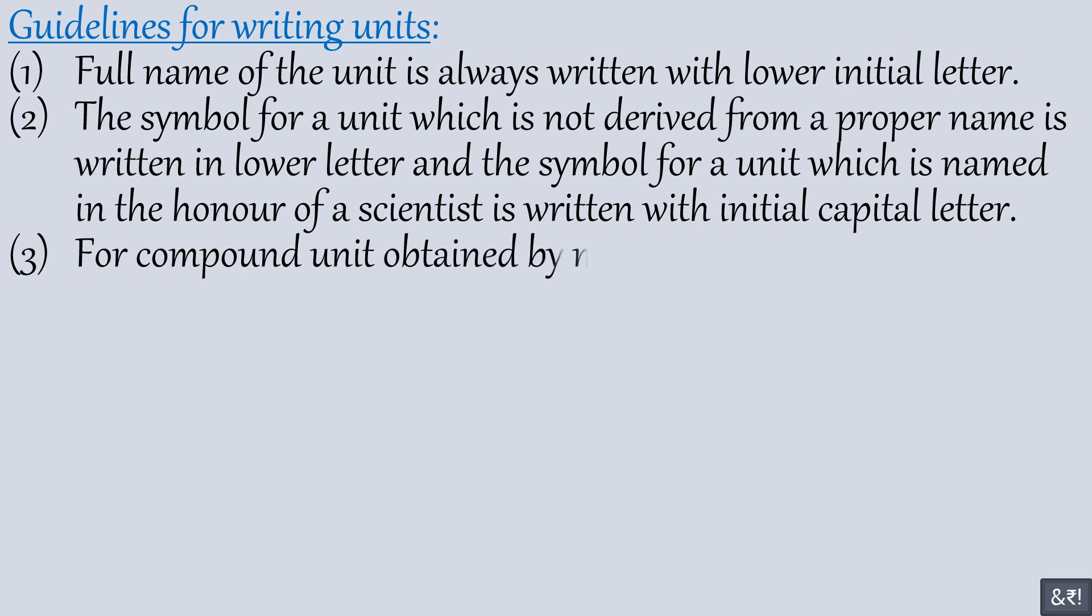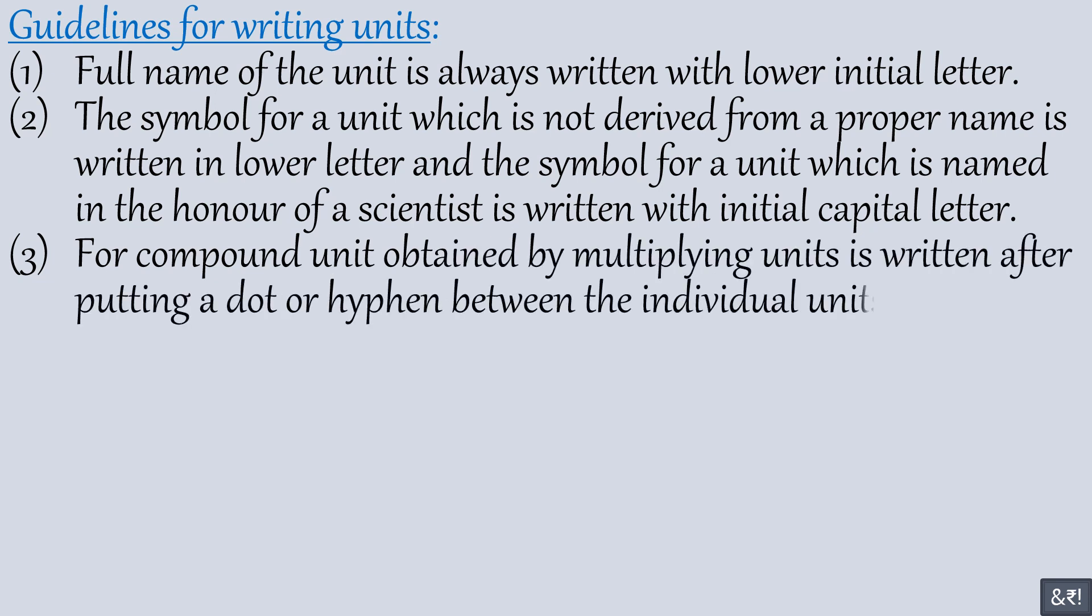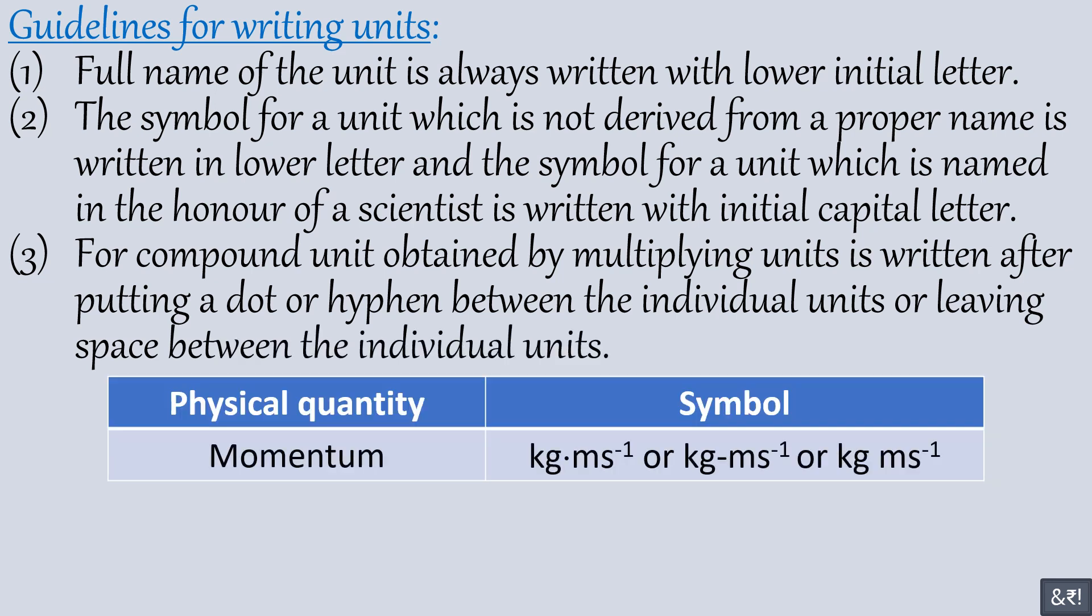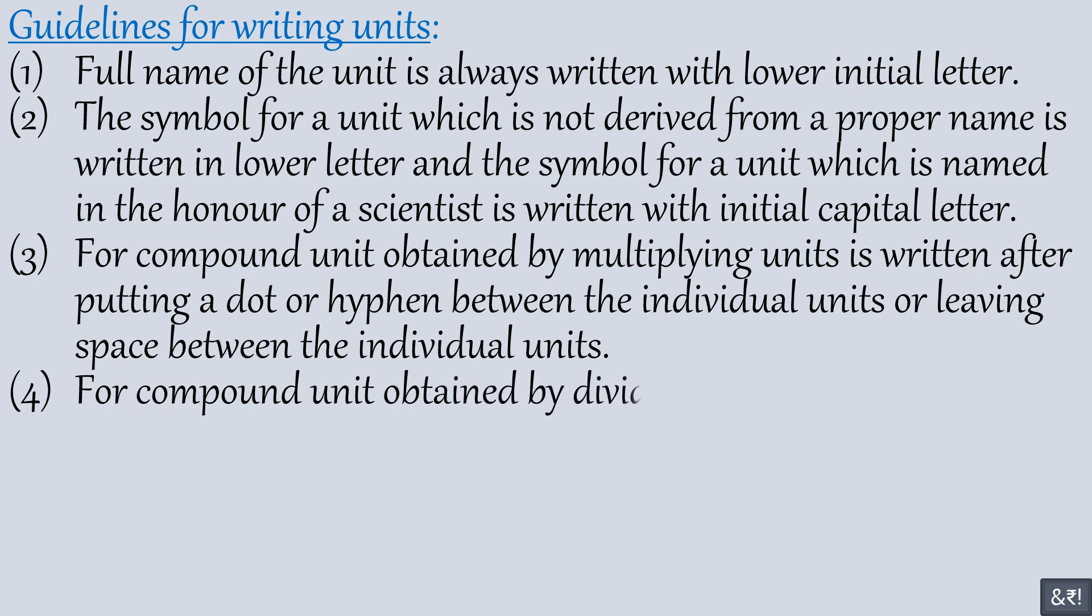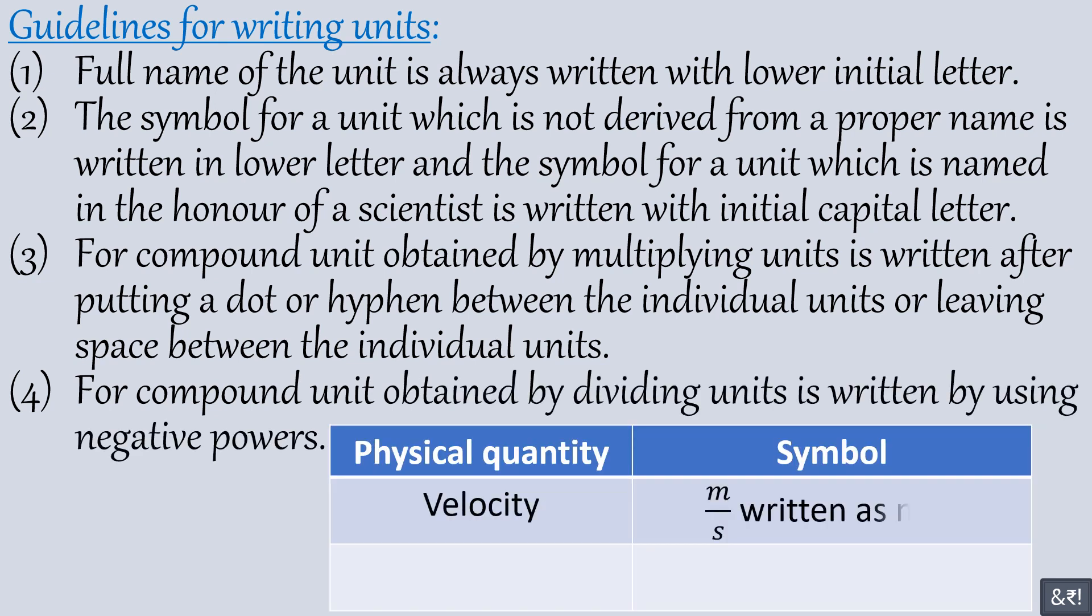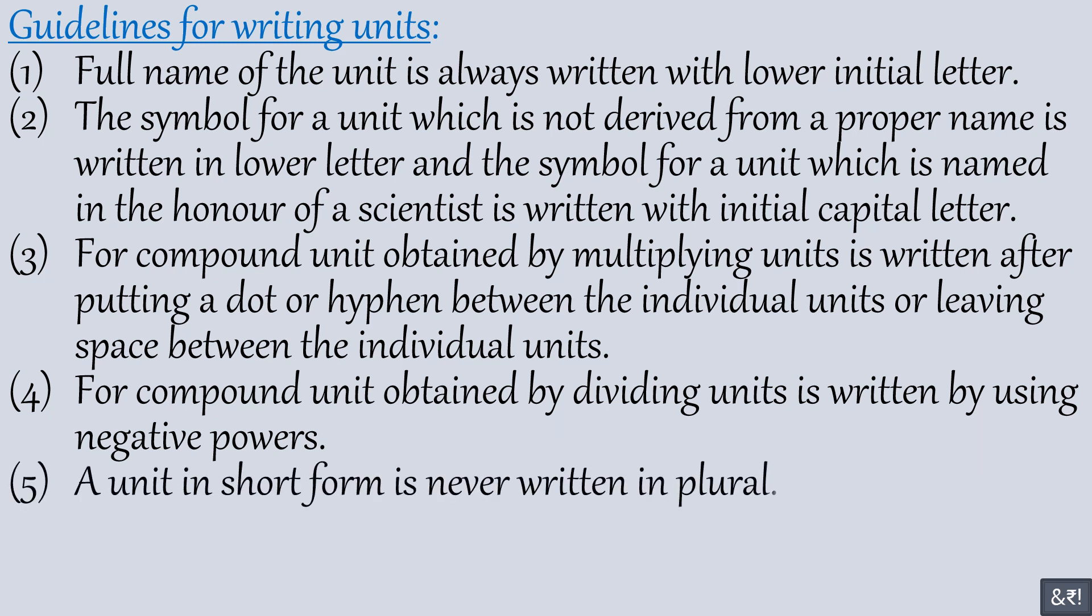Third, for compound unit obtained by multiplying units, is written after putting a dot or hyphen between the individual units or leaving space between the individual units. Fourth, for compound unit obtained by dividing units, is written by using negative powers. Fifth, the unit in short form is never written in plural.